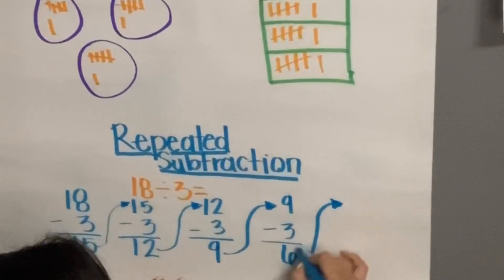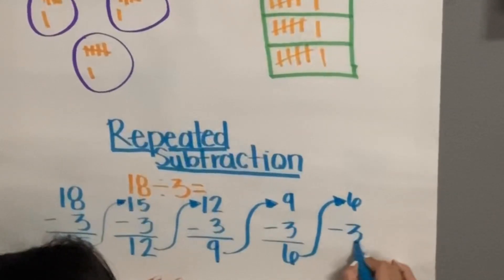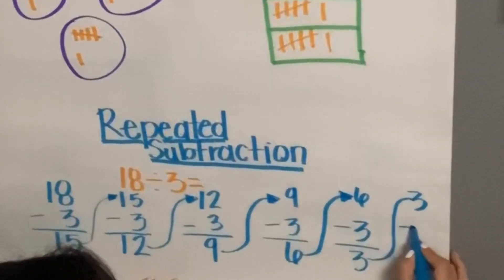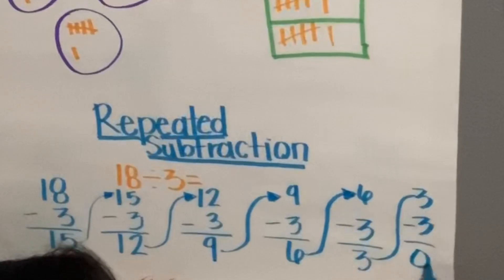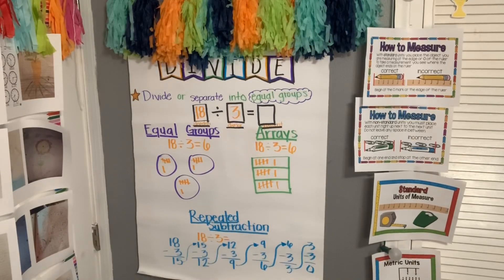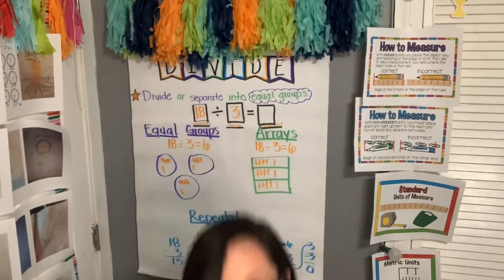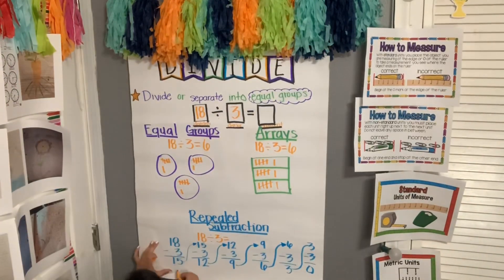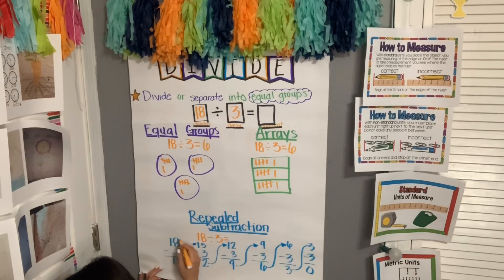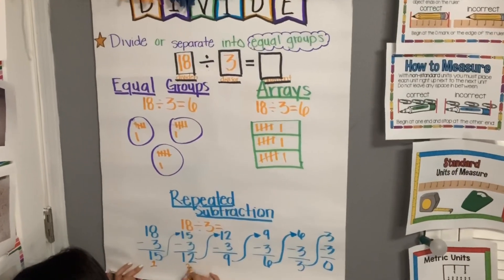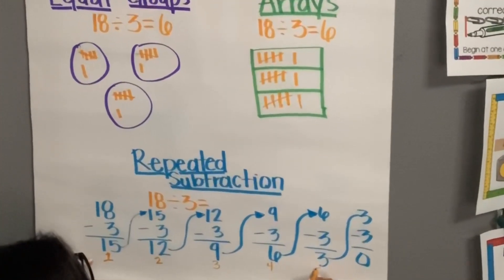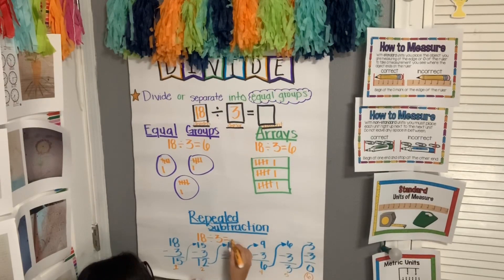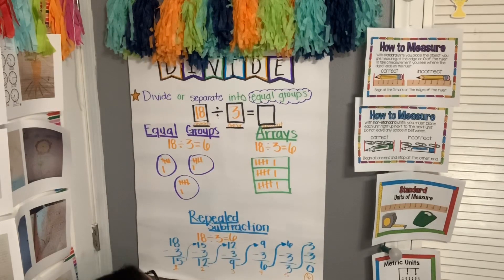I just keep subtracting until I get to zero: 9 minus 3 is 6, then 3 minus 3 is 0. To find the quotient, I need to count how many times I subtracted: 1 time, 2 times, 3 times, 4 times, 5 times, 6 times. I subtracted 6 times to get to zero, so my quotient is 6. Therefore, 18 divided by 3 equals 6!